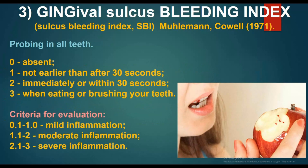Surplus Bleeding Index by Mühlemann and Kowall, 1971: probing in all teeth. Grade 0: absent. Grade 1: not earlier than after 30 seconds. Grade 2: immediately or within 30 seconds. Grade 3: when eating or brushing teeth. Criteria for evaluation: 0.1 to 1 — mild inflammation; 1.1 to 2 — moderate inflammation; 2.1 to 3 — severe inflammation.